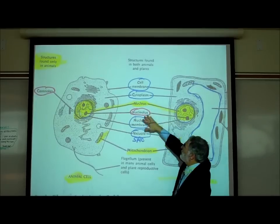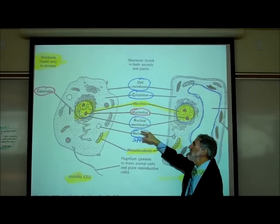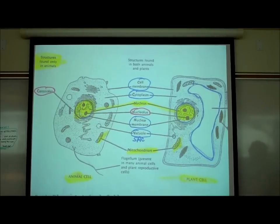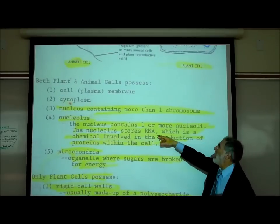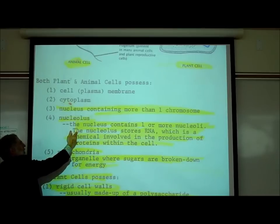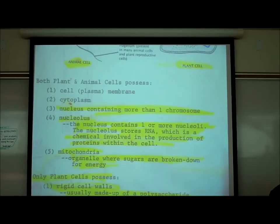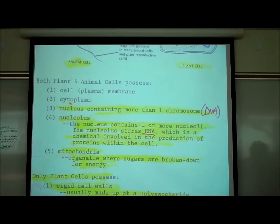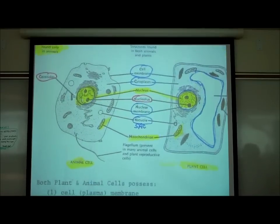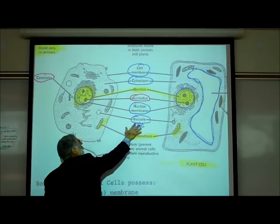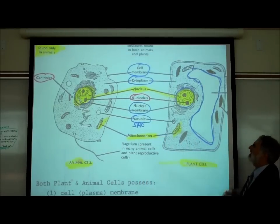The nucleus contains more than one chromosome made up of DNA. The nucleus contains one or more nucleoli, and the nucleolus stores RNA — a chemical needed for the production of proteins within the cell. What else do both animal cells and plant cells have? There are various vacuoles — a vacuole is a little storage sac — and both animal and plant cells can have many of these vacuoles.